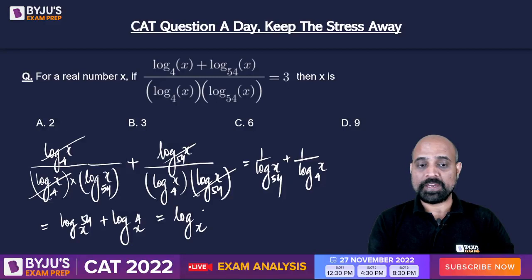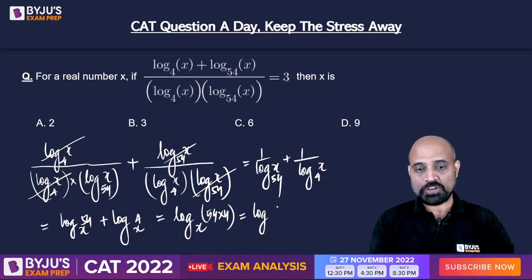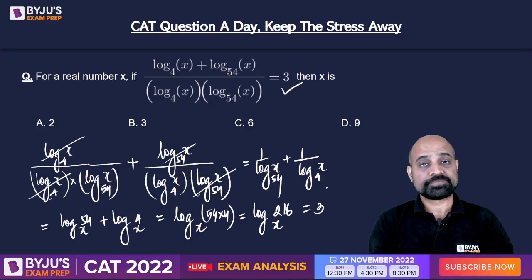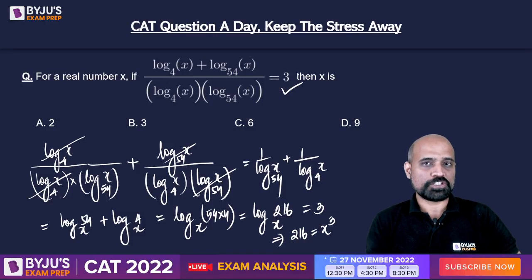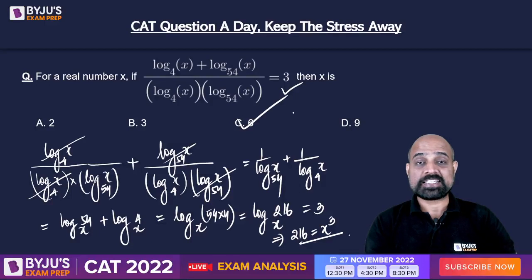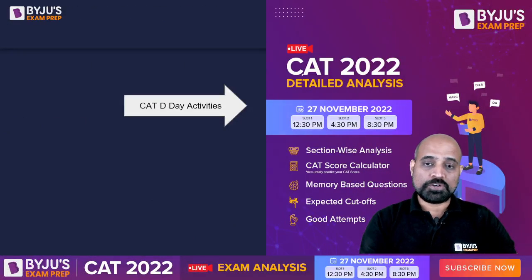Now we have the sum of two logs with the same base, so we will have a single log with the same base and the values get multiplied. 54 into 4 is 216, so we have log 216 to the base X, and this is given as 3. Removing the log, that gives us X cubed equals 216. The value of X for which the cube is 216 is 6, since 6 cubed is 216.